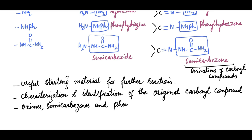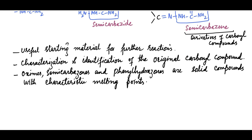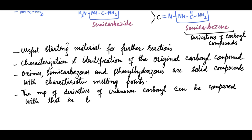Oximes, semicarbazones, and phenylhydrazones are often solid compounds with characteristic melting points. The melting point of derivative of unknown carbonyl can be compared with that in library, and if matched, we can be certain about the correct identification of the compound.